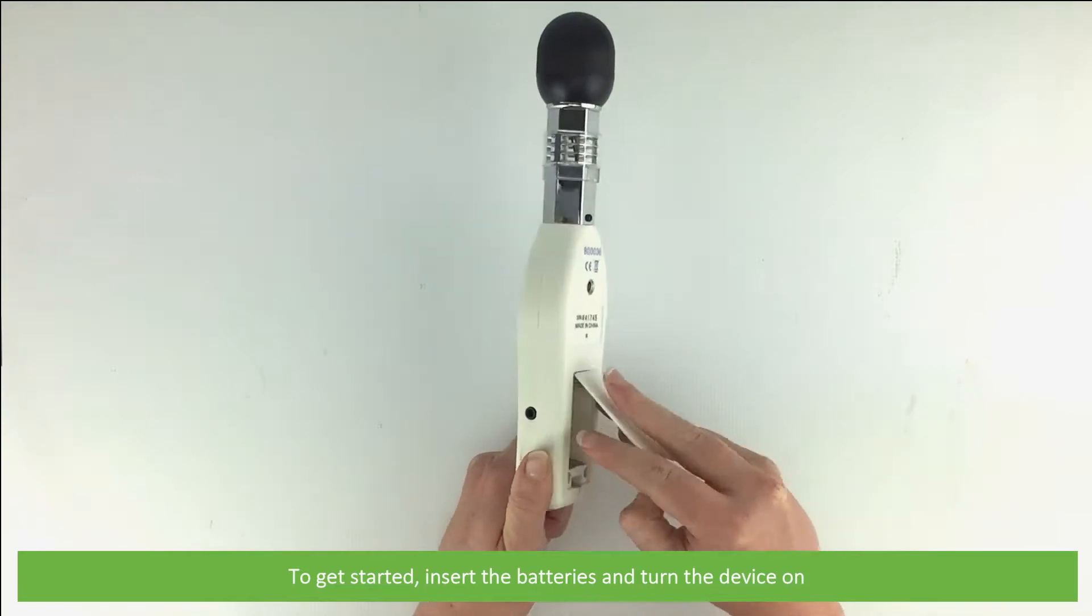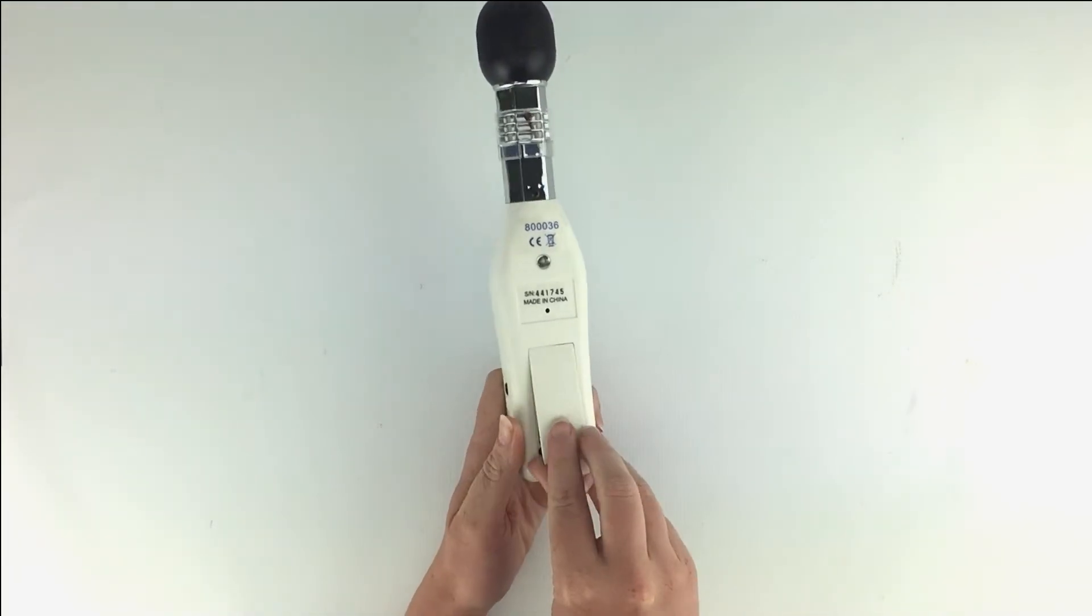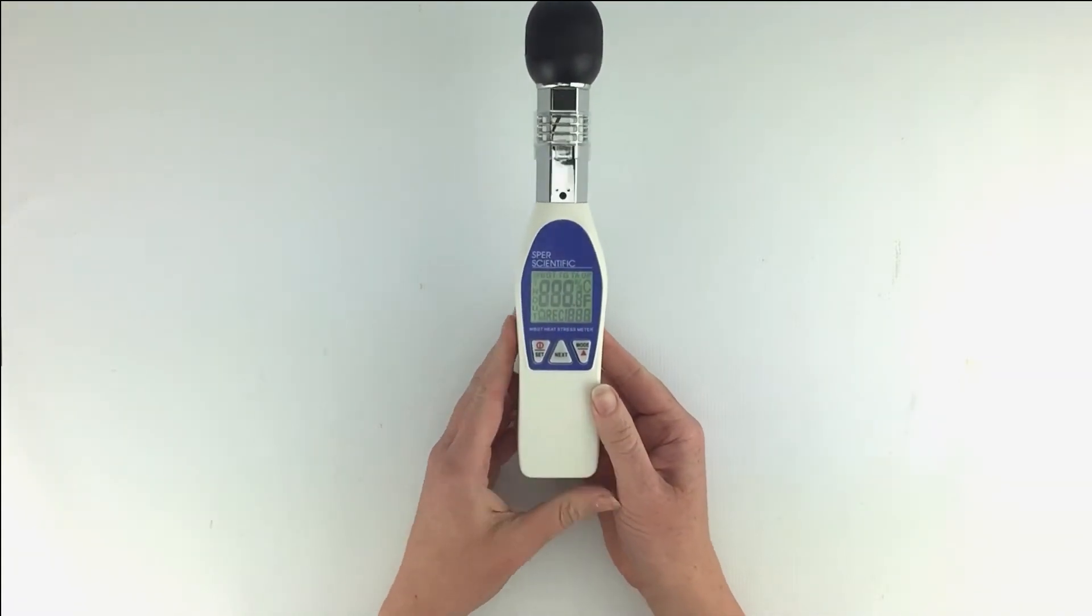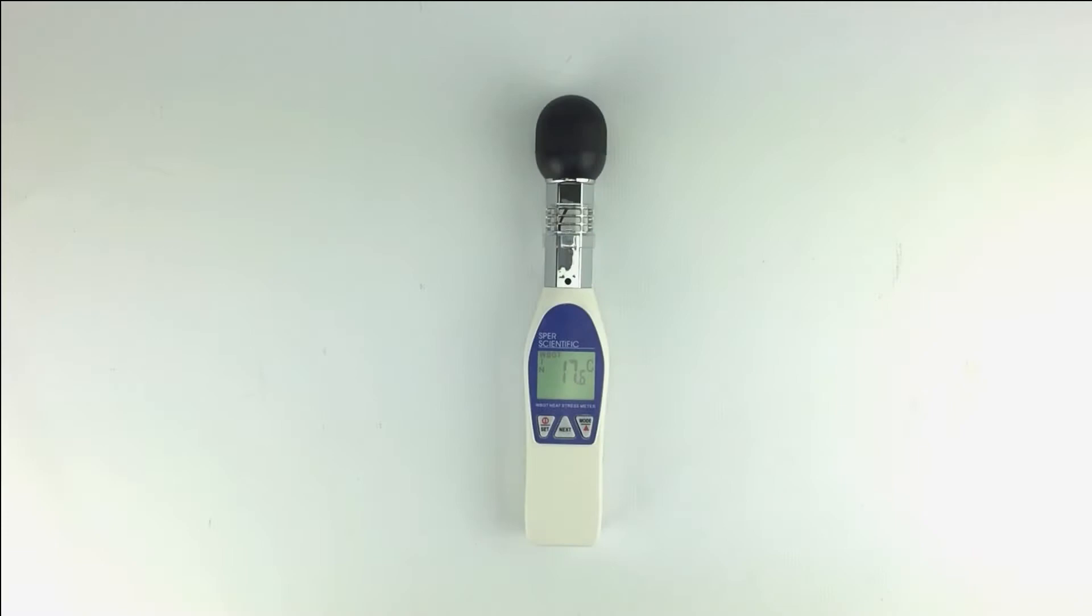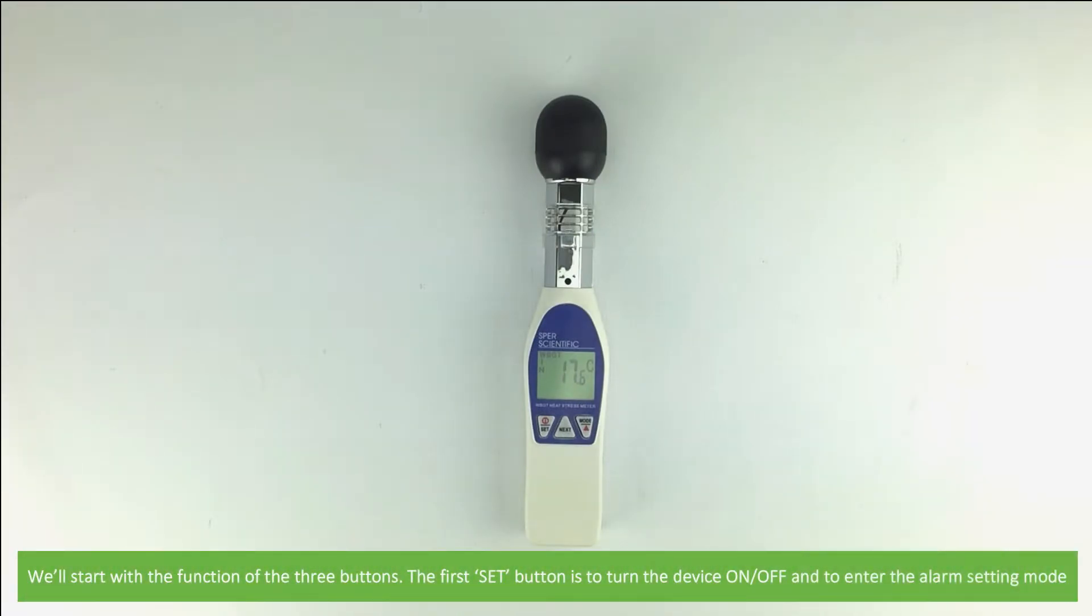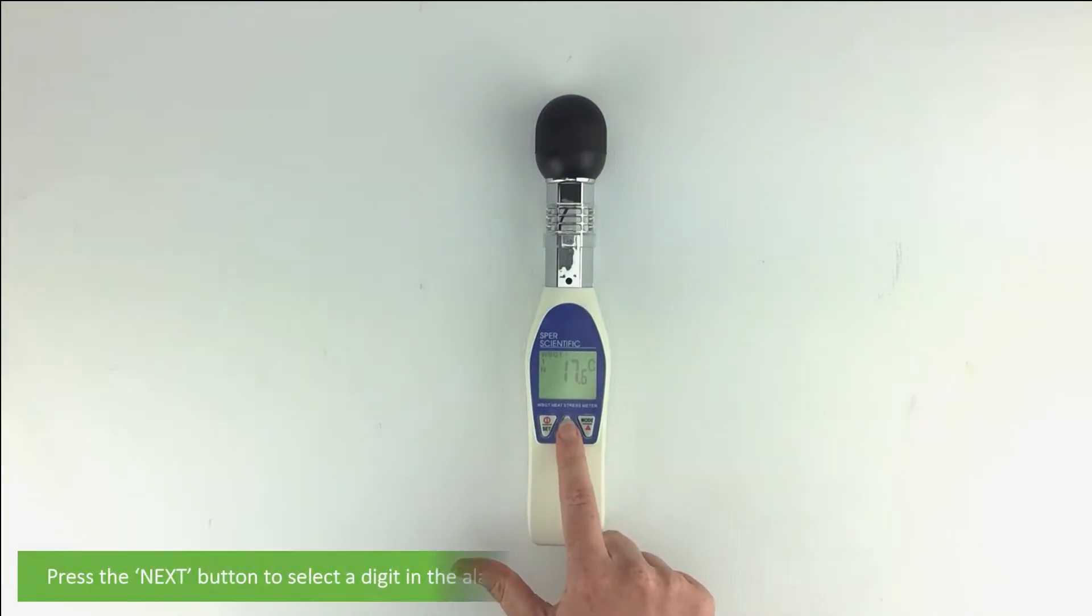To get started, insert the batteries and turn the device on. We'll start with the function of the three buttons. The first SET button is to turn the device on or off and to enter the alarm setting mode. Press the NEXT button to select a digit in the alarm setting mode and to exit the setting mode when complete.